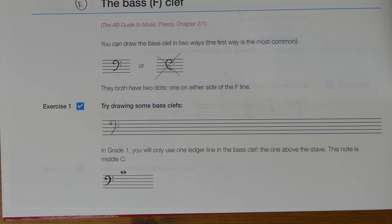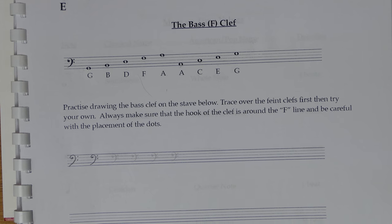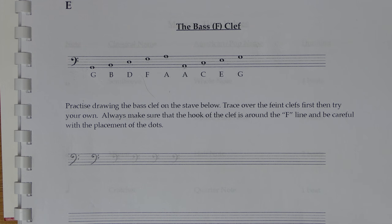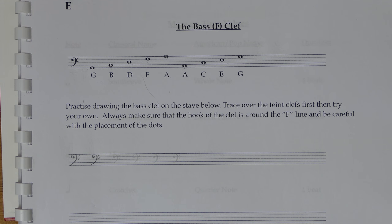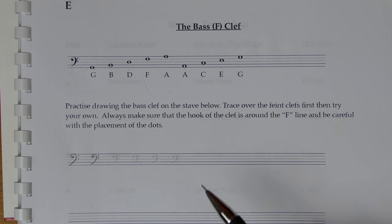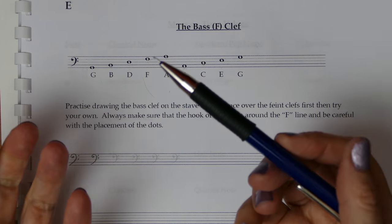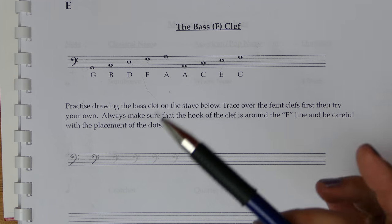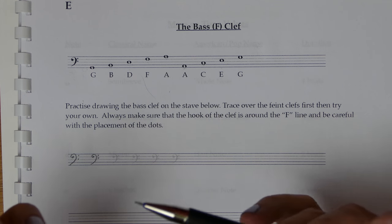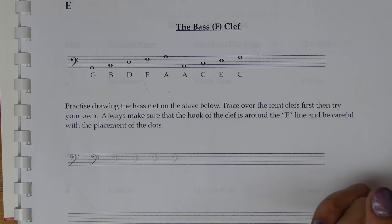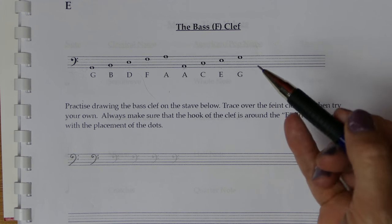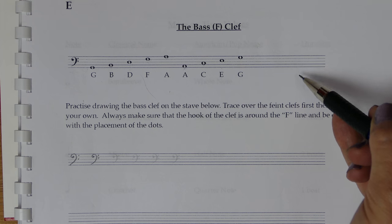Now we're going to look at the notes of the bass clef. The notes of music notation always progress from A, B, C, D, E, F, G and then back to A, B, C, D, E, F, G again — it just keeps going round those seven notes. When you get from A to A again, you're eight notes on and we call that an octave. So each time you get a repeat of the note name it's an octave apart, and always placed at a particular point on the stave system.